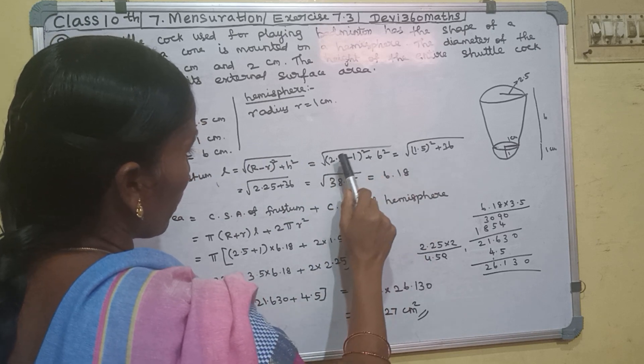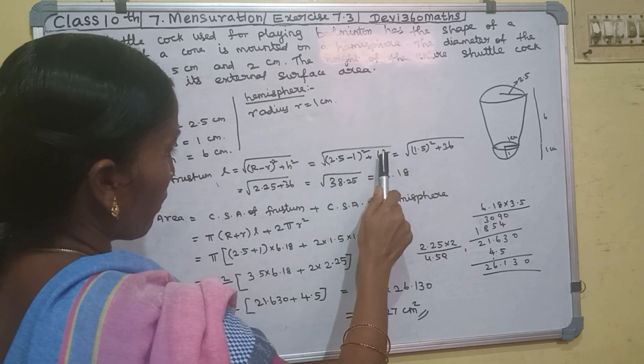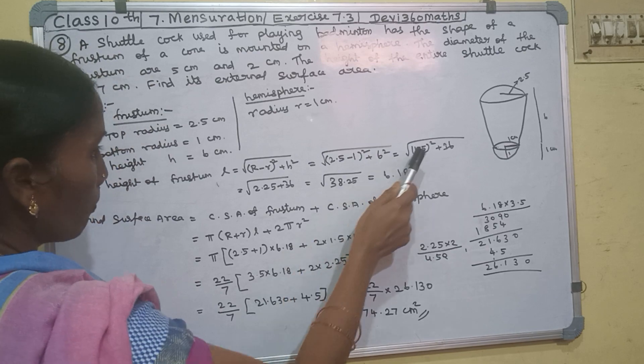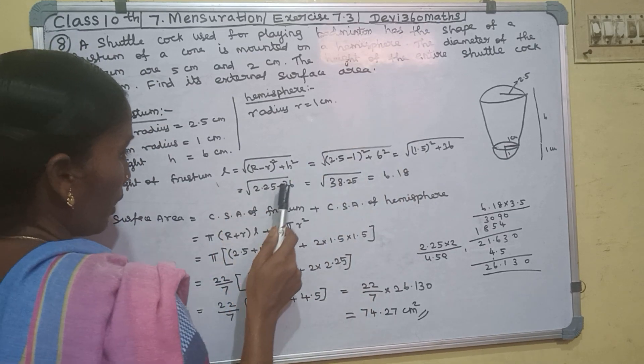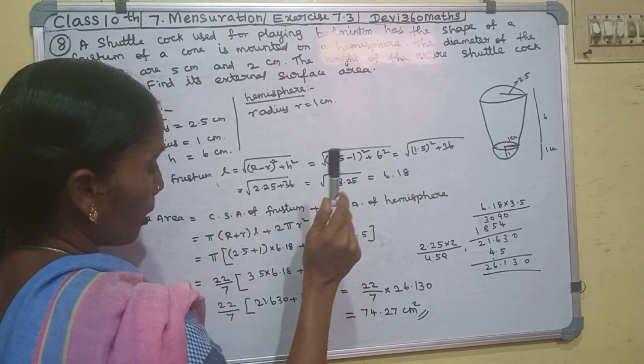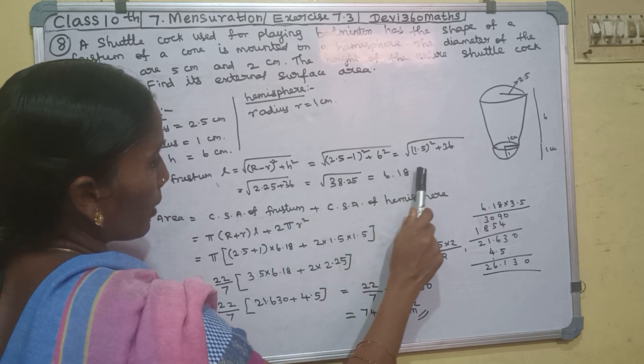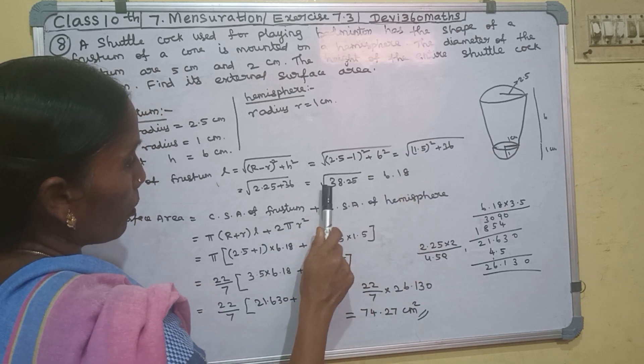2.5 minus 1 is equal to 1.5. 6 squared is equal to 36. 1.5 squared is equal to 2.25. 36 add 2.25 equals 38.25. The square root is equal to 6.18.